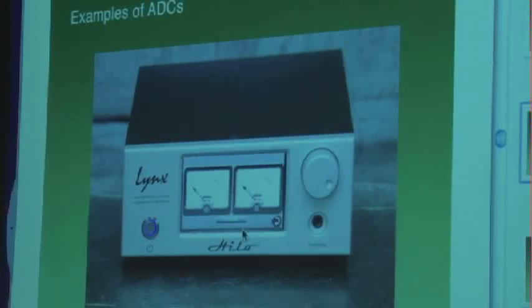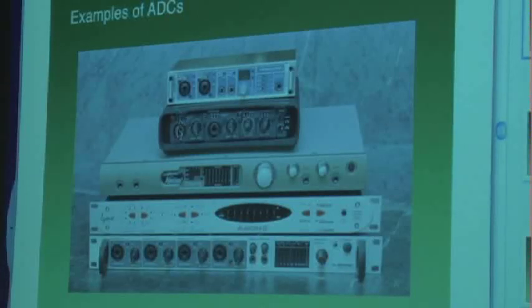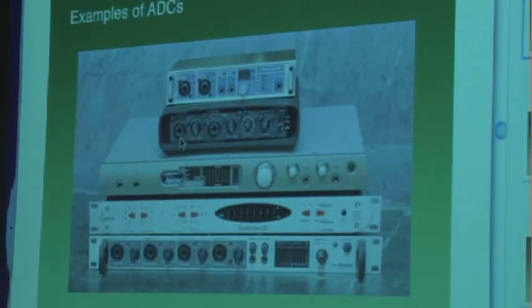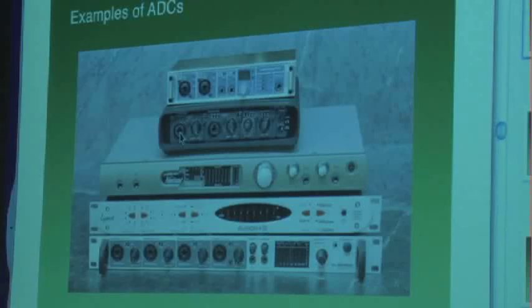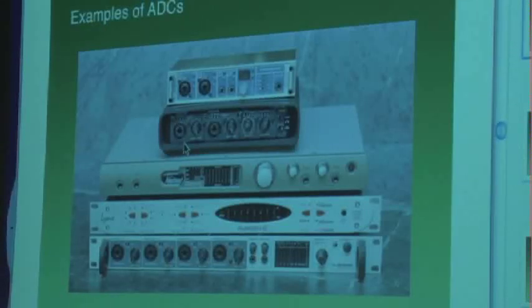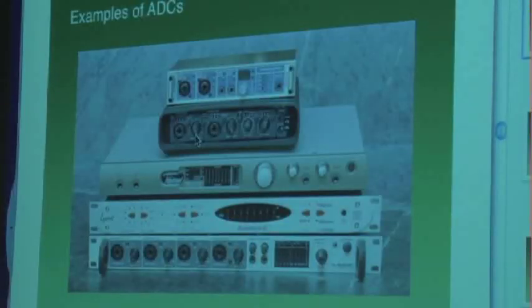On the TC Electronic Impact Twin, for a moving coil cartridge, you use the XLR connector on the combo input — there's pin 1, 2, and 3 for XLR. In the middle, you can plug in a phone plug for the instrument input. So for moving coil, you use the XLR on that same combo input. This particular unit has a hardware gain control knob. You don't necessarily need the software control panel on this one.